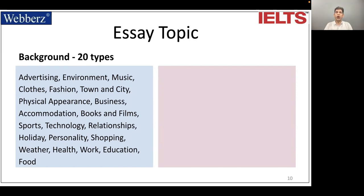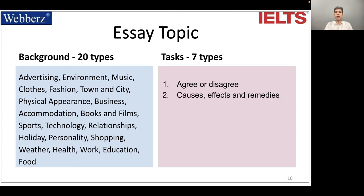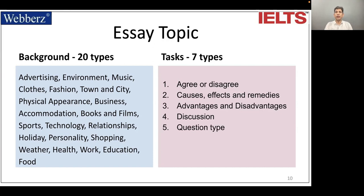And we have got seven types of tasks. The first one is agree or disagree. Second is cause, effect, and remedies. Third is advantages and disadvantages. Fourth is discussion. Fifth is question type. Sixth is positive or negative development. And seventh is a hybrid type of essay.